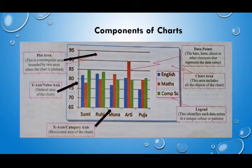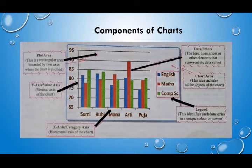The next component is data points. A data point is any single or unique piece of information — it represents the data value. Next one is the legend. The legend is often located on the right-hand side of the chart. It identifies each data series in a unique color or pattern, so we can easily understand which color represents which value. And the next one is the chart area, which encloses all the elements of a chart.